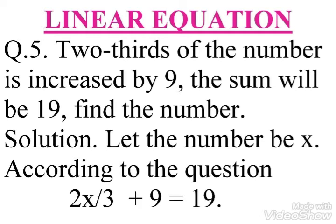Now, in first sentence, it is given that two thirds of the number is increased by 9. It means we have to multiply the number by 2 upon 3. So we will get 2x upon 3 and it is increased by 9, so plus 9.